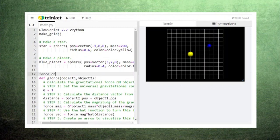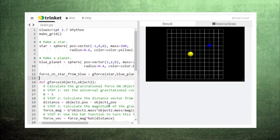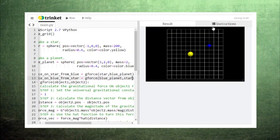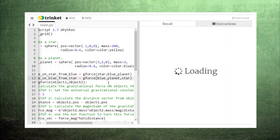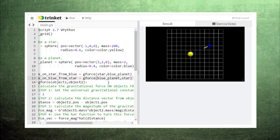Next, we need to calculate the force of gravity between the star and the planet. This is where our g-force function comes in. Notice that we need to use this function twice. Once for the force on the planet from the star, and once for the force on the star from the planet. Now when we run the code, we see arrows representing the force of gravity that the star exerts on the blue planet, and that the blue planet exerts on the star.